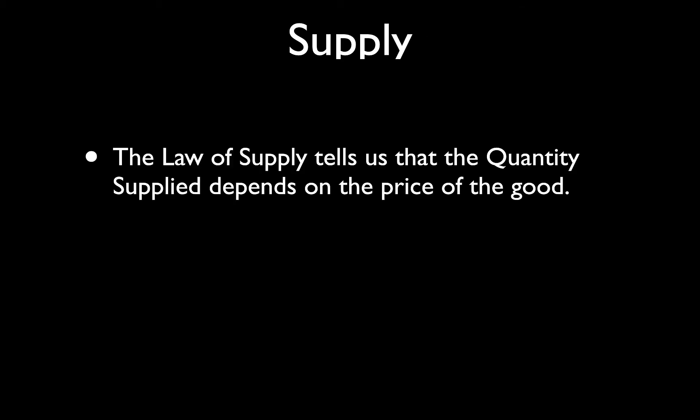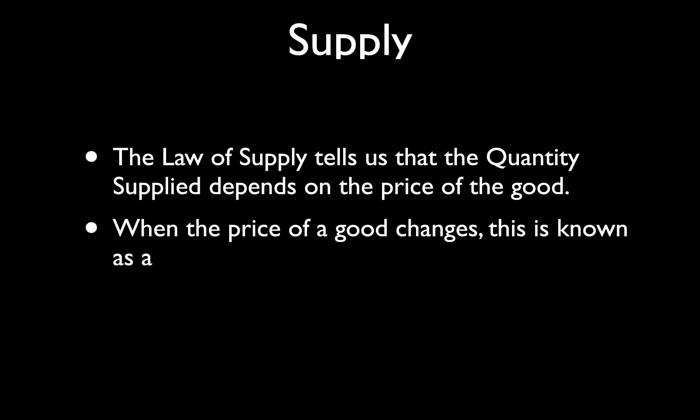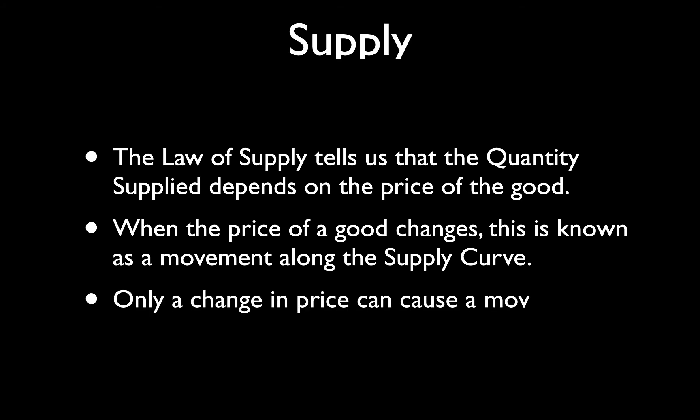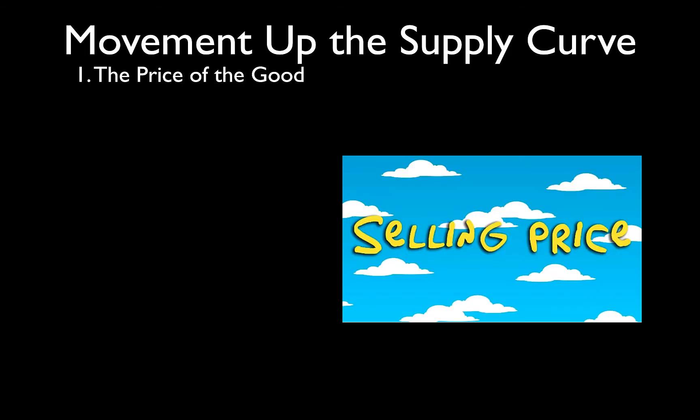The law of supply tells us that quantity supplied depends on the price of the good. When the price of the good changes, this is known as a movement along the supply curve, and only a change in price can cause a movement — just like demand.